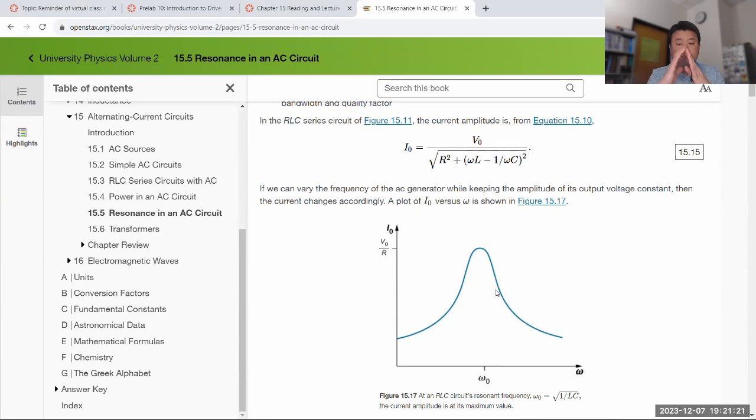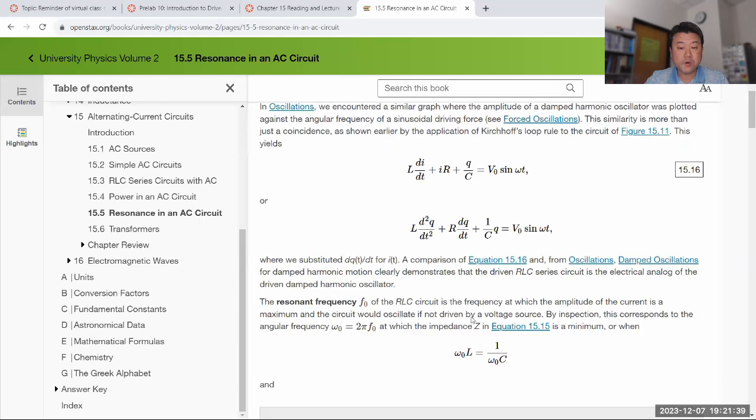And this width, how broad that width is, how narrow that width is, that's associated with how much damping, how much power dissipation there is. And when that R is large, that makes this width broader.